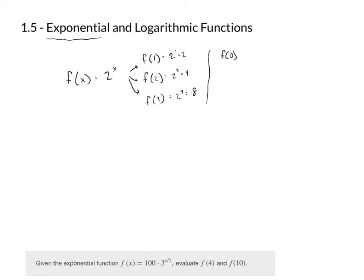We can evaluate f(0): 2 to the 0 power is 1. Whatever the base is raised to the 0 power, the answer is 1. If we get into negative values, f(−1): the answer doesn't flip to negative, the answer flips to a fraction. 2 to the negative 1 power is 1/2. And f(−4) = 2^(−4) = 1 over 2^4 = 1/16.